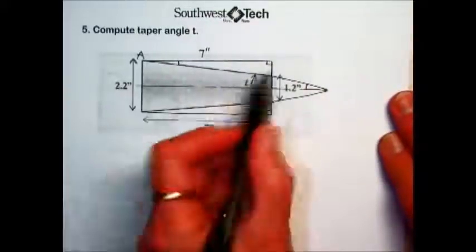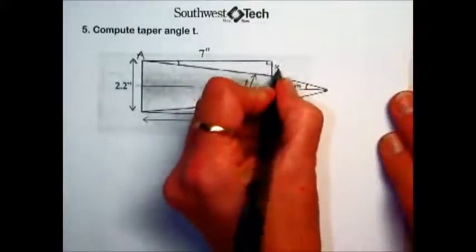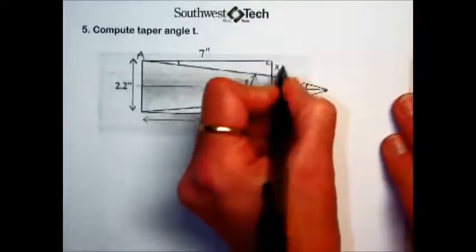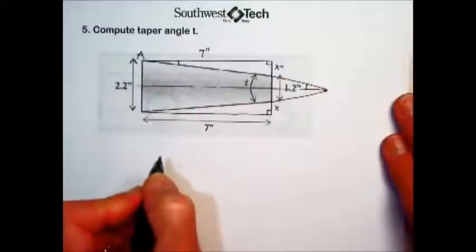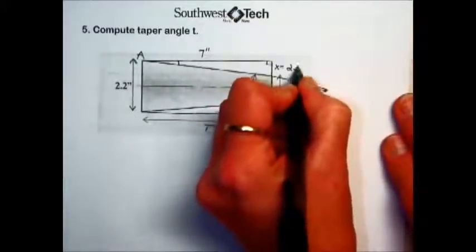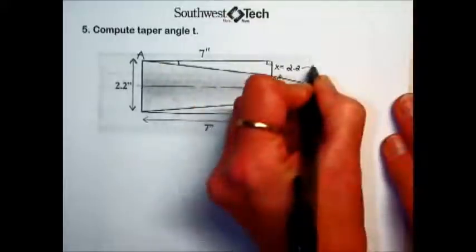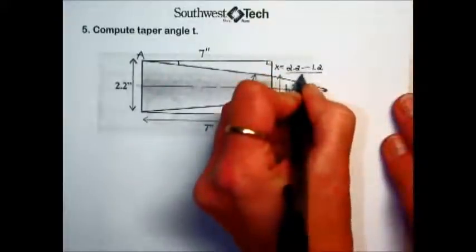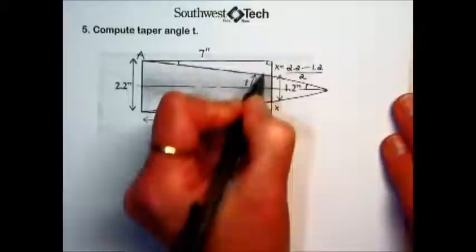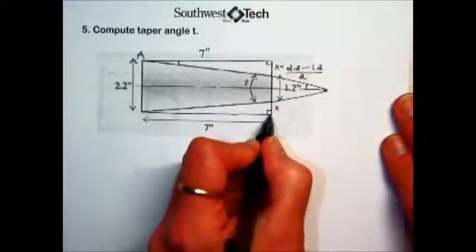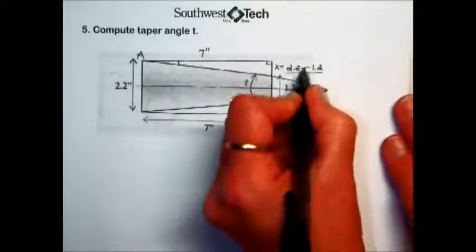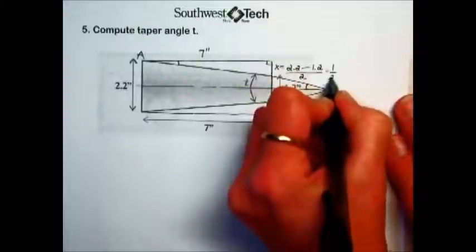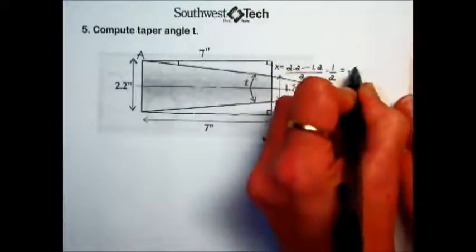The difference between those two will be this length plus this length. So to find x, I'm going to take the overall taper width, the widest measurement, 2.2, subtract the narrow from it, and then divide it by 2 since half of that distance is here and half of that difference is down here. So 2.2 minus 1.2 leaves us 1 inch. Dividing that by 2 gives us 0.5.